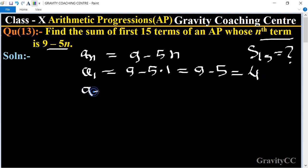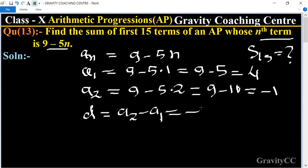Putting n equal to 2, it becomes 9 minus 5 times 2 equals 9 minus 10 equals minus 1. Therefore d equals a2 minus a1 equals minus 1 minus 4 equals minus 5.